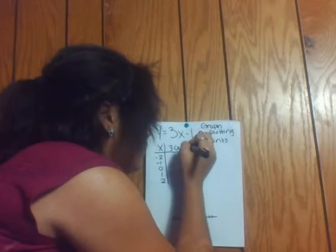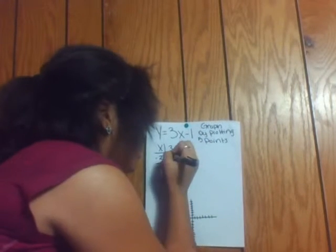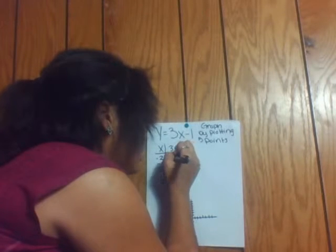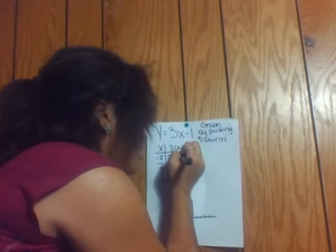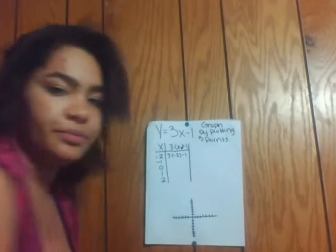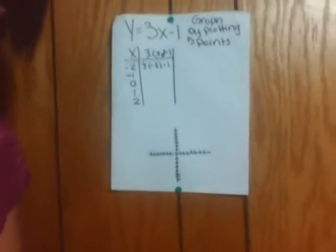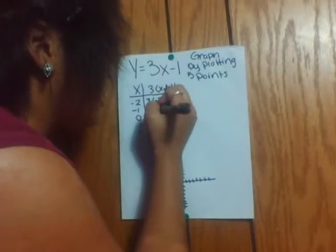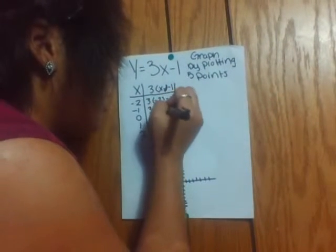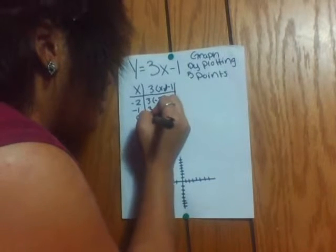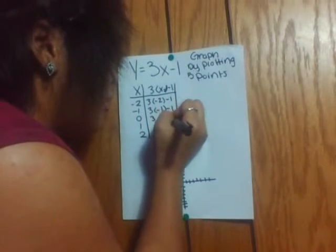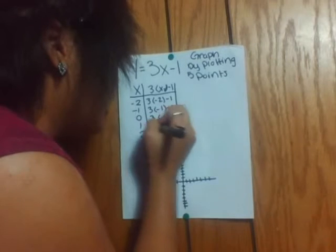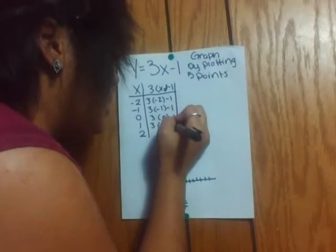So you're going to fill it in: 3 times negative 2 minus 1, then 3 times negative 1 minus 1, 3 times 0 minus 1, and 3 times 1 minus 1.